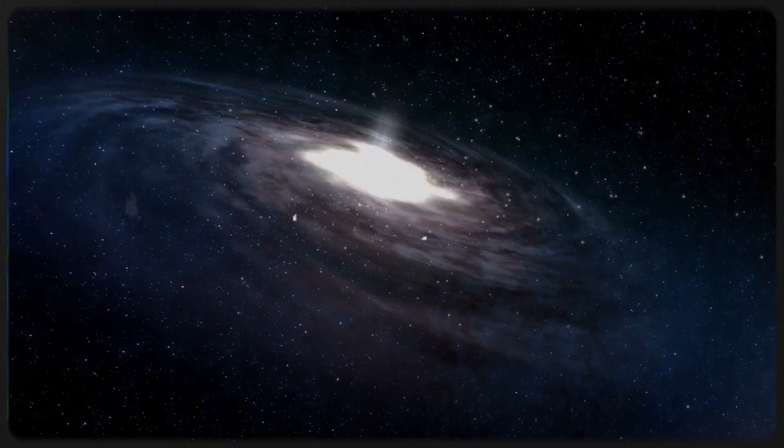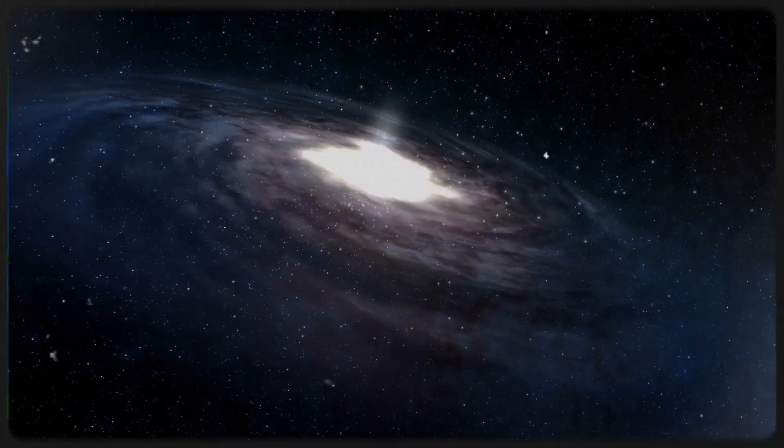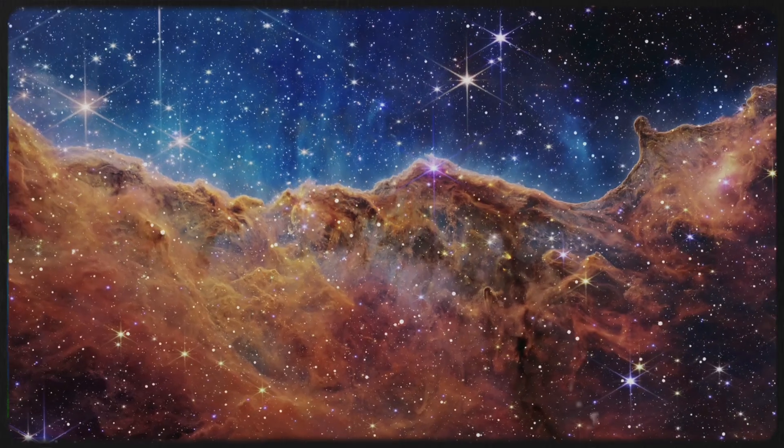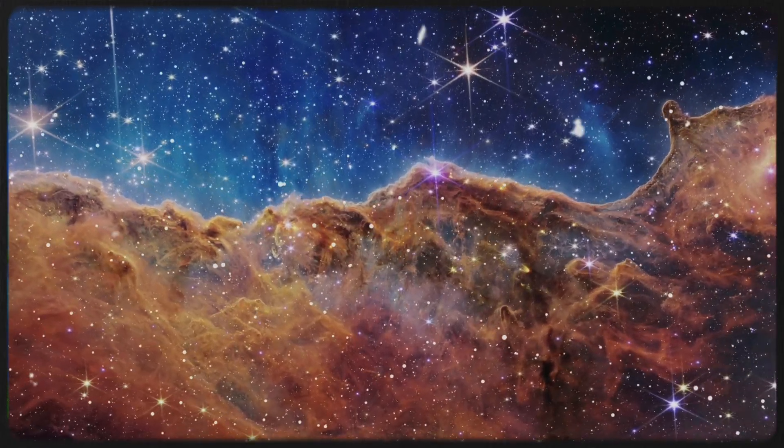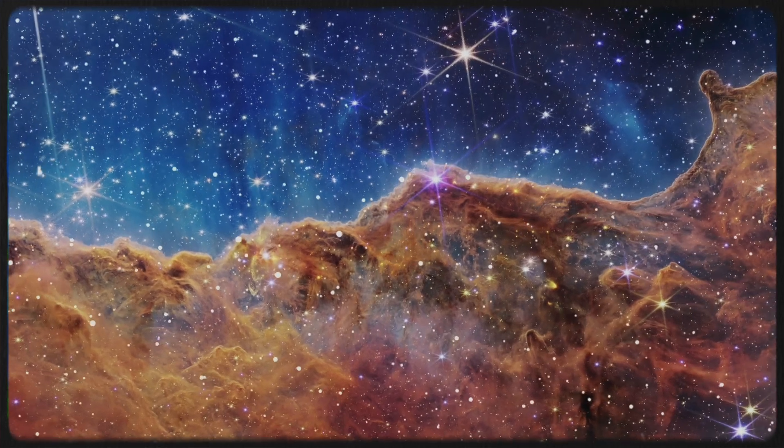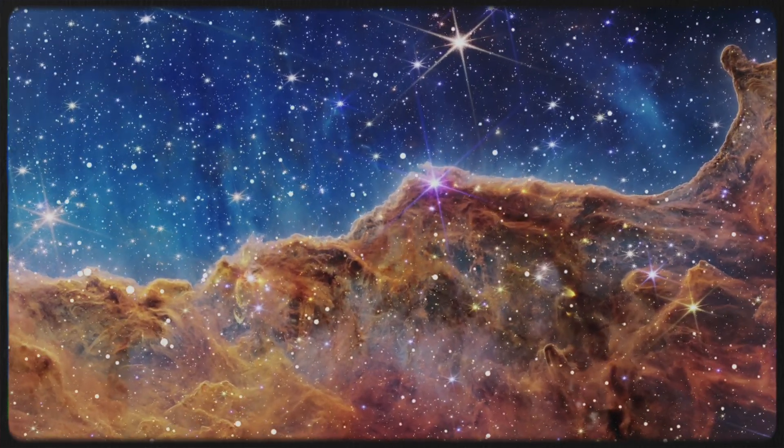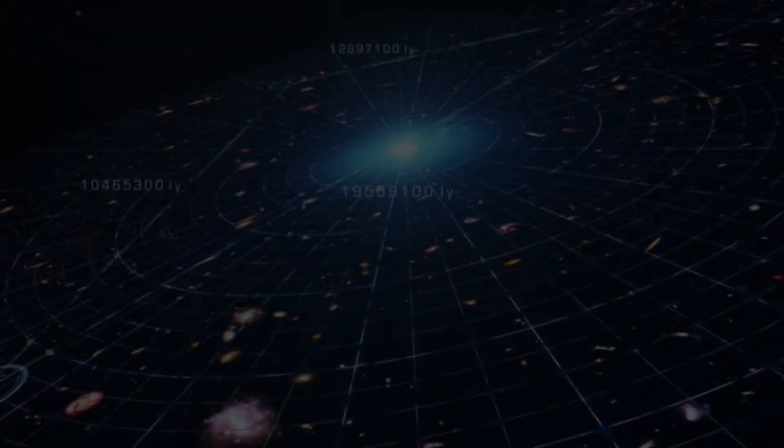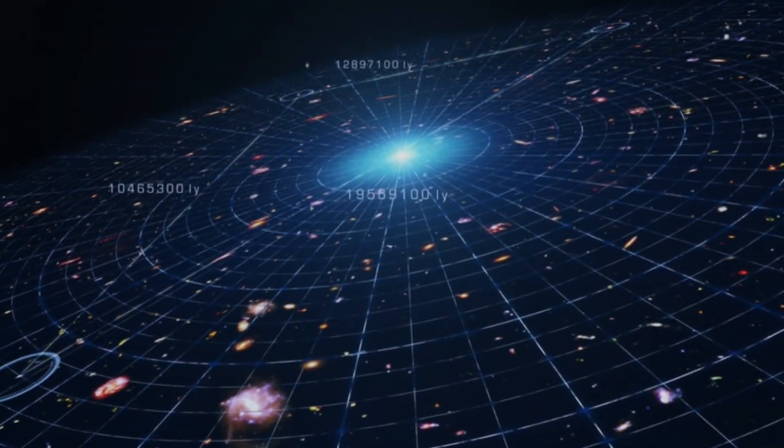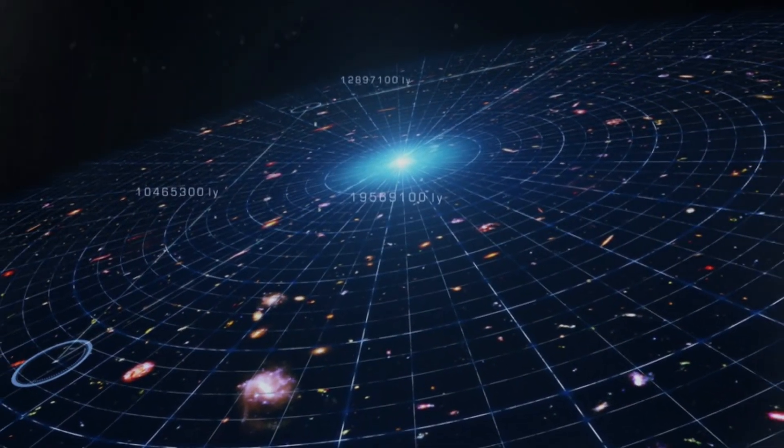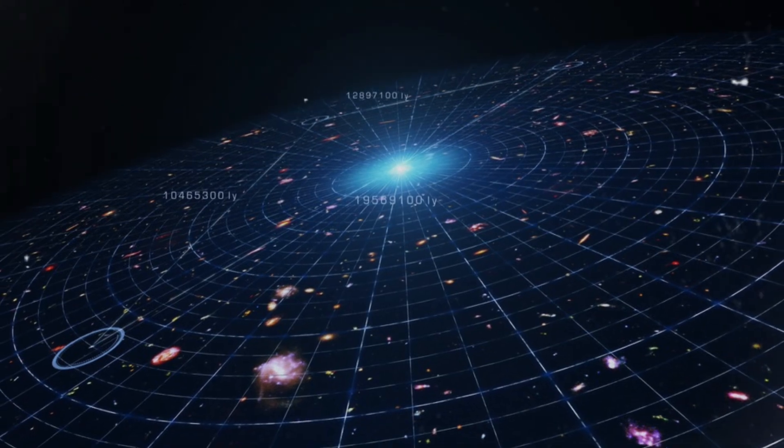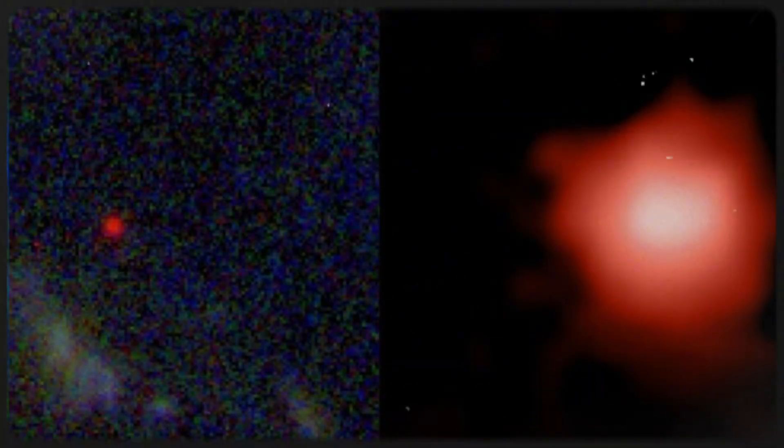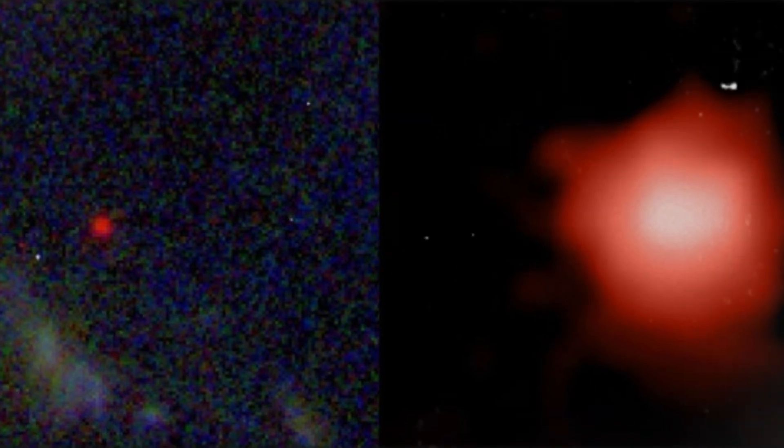But there's another factor at play here: the expansion of the universe. The universe isn't standing still, it's constantly stretching and growing. As the universe expands, the light traveling through it gets stretched too, which means its wavelength grows longer. That's why this galaxy looks so red, because it's so far away, and the light from it has been stretched out by the universe's expansion. All of these factors together make Aztec C71 an incredibly unique and extreme galaxy, one that's really tough to detect and study.